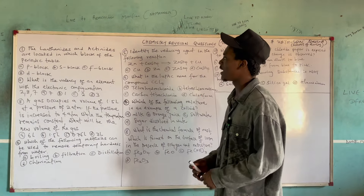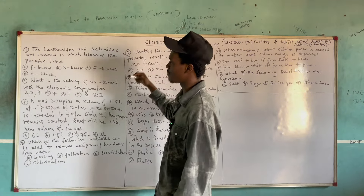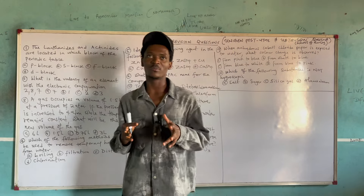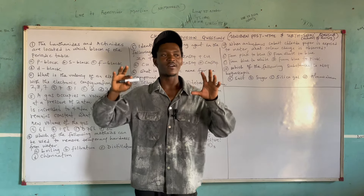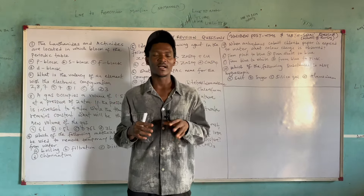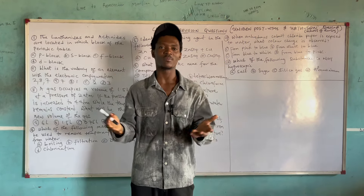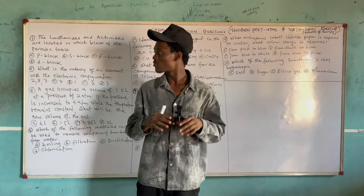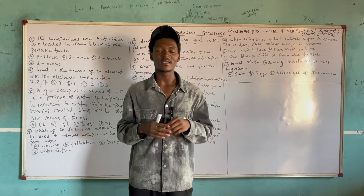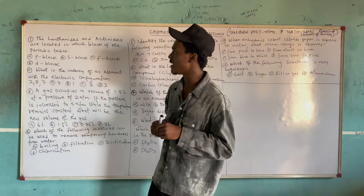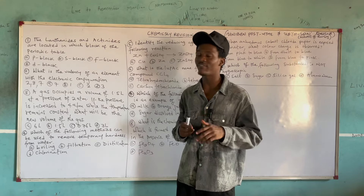The lanthanides and actinides are located in which block of the periodic table? When you study your periodic table, you get to know the complete blocks or elements arranged in groups and in periods. There are some elements not present in the main block — they are placed below, and are considered the lanthanide and actinide series. These elements are regarded as inner transition elements and are called the F block elements, because their orbital representation ends in the F orbital.